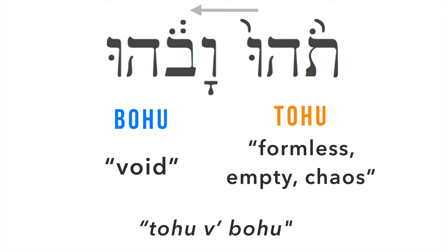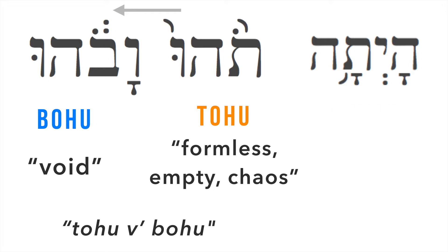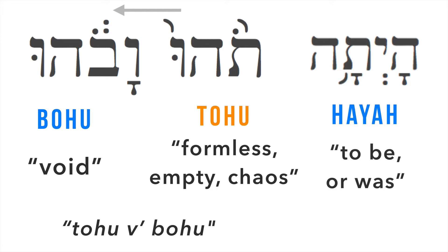Interestingly, the word right before it is the Hebrew word haya, which is translated as "to be" or "was." You can see how this creates the phrase "was, formless, and void" reading from right to left. But some scholars have wondered if the better translation of haya is not "was" but "became" — the earth became formless and void.